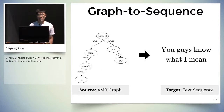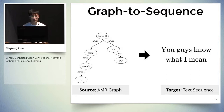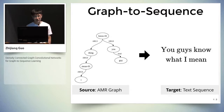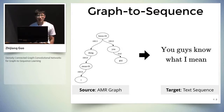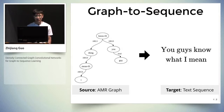The graph-to-sequence learning task can be framed as transducing graph structures to sequences for text generation. Here we use an example in AMR-to-text generation to illustrate this process. The source side is an AMR graph, which is a meaning representation, and the target side is a natural language sequence corresponding to the meaning representation. The main challenge here is how to encode the AMR graph.